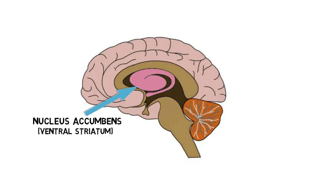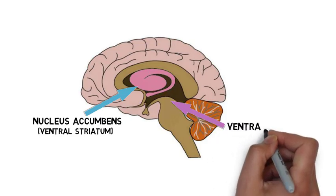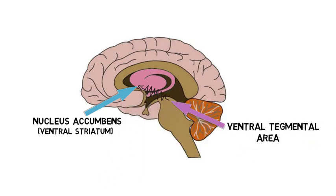The nucleus accumbens receives fibers from a dopamine-rich structure in the midbrain called the ventral tegmental area. These fibers are part of a pathway called the mesolimbic dopamine pathway, which is a primary component of the reward system.